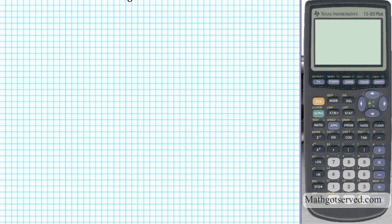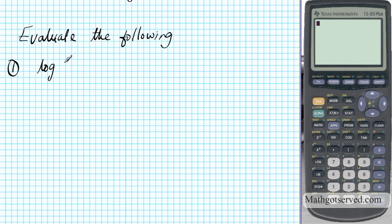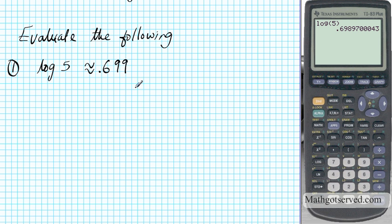Let's evaluate some logarithms using our calculator. Number 1: let's say we want to evaluate log of 5. We enter log of 5 in the calculator and it's approximately 0.699 to 4 decimal places. Now what is the base here? This is known as a common logarithm, which is log base 10. In your calculator, you have built-in log base 10, so any time you're computing a log, you're computing log base 10.